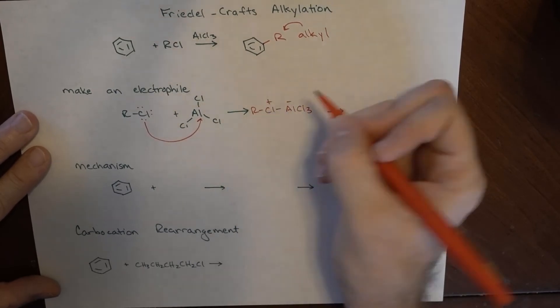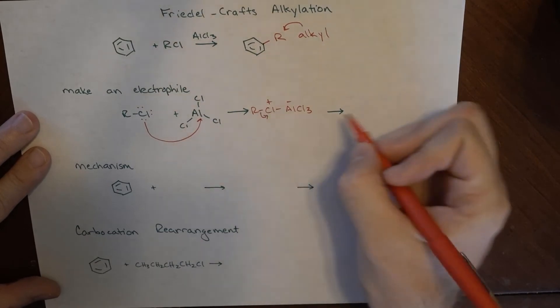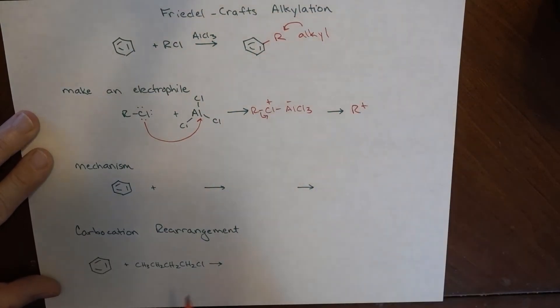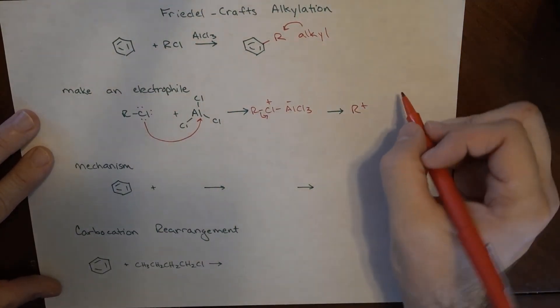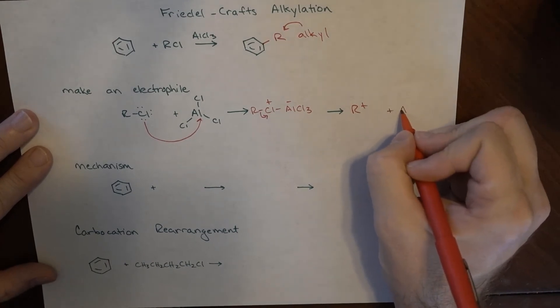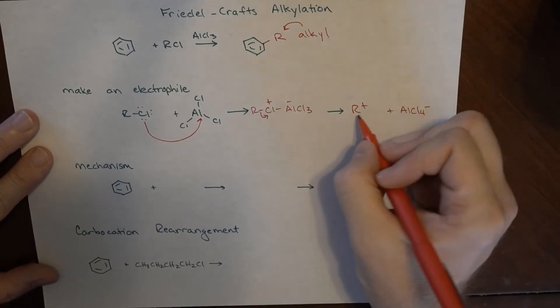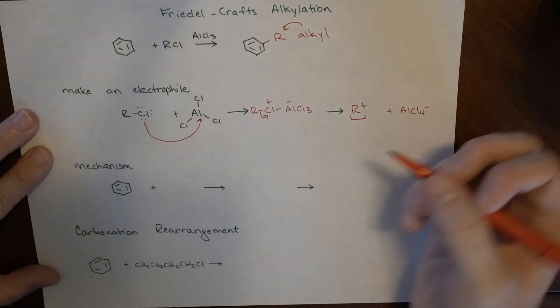This has kind of a negative charge. This has kind of a plus charge. Electrons are given over to this. So we get this positively charged alkyl substance and AlCl4 minus. And this is what we're paying attention to because this is our electrophile.